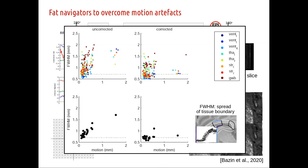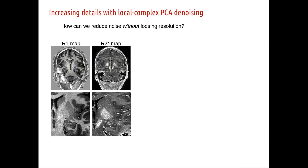Whereas some other boundaries, like the boundary with CSF, are much sharper. We have all these nice images, but they're still very noisy, so one thing we really wanted to do is to denoise them without removing the high-quality detail that we get in high-resolution images. There was a very nice work from Manjón and Coupé from 2013.